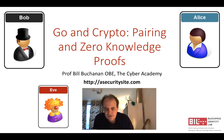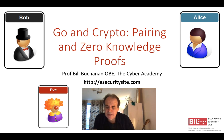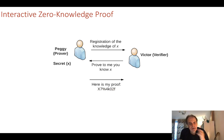In this presentation we're going to look at pairing cryptography and how we can implement zero knowledge proof. The application will be written in Golang, and we'll try to see if we can prove information from Bob to Alice.